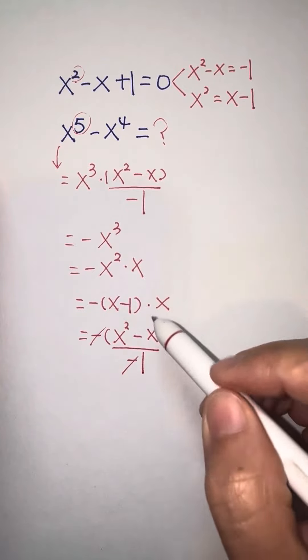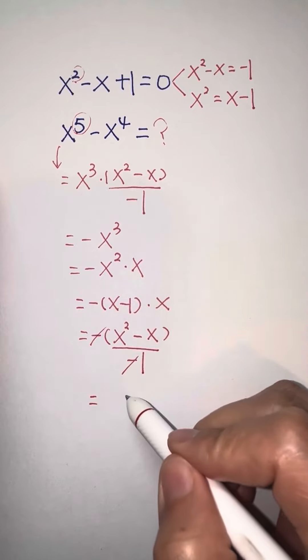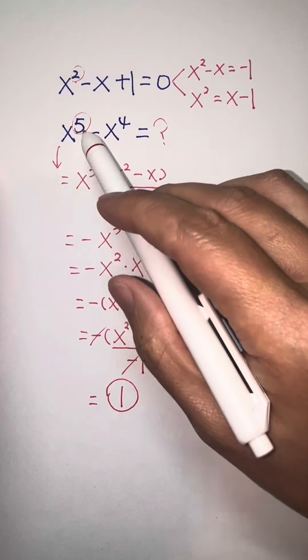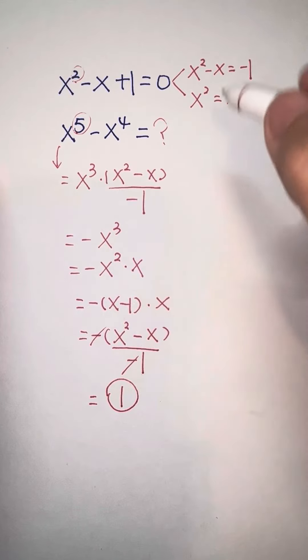And negative, negative canceled. That means our final answer is 1. So x to the power 5 minus x to the power 4 equals 1. You guys are so smart. I'm so proud of you. See you next time.